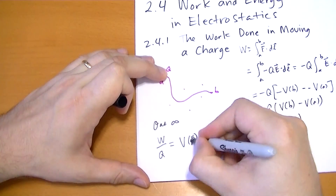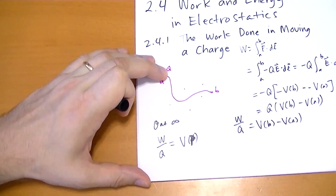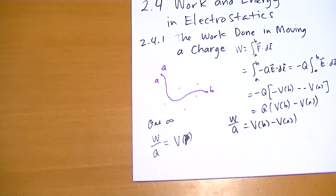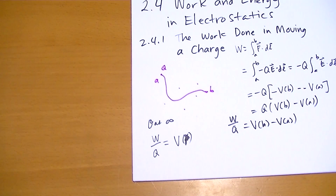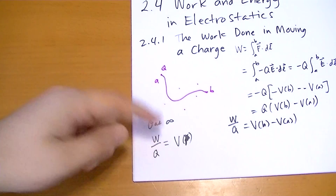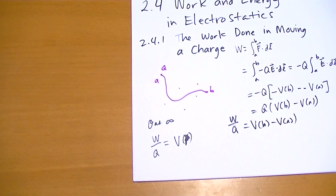Let's use P. So the energy it takes to move a charge Q into a particular point is just equal to the potential at P times the charge. It's pretty simple — that's all you really need to know.